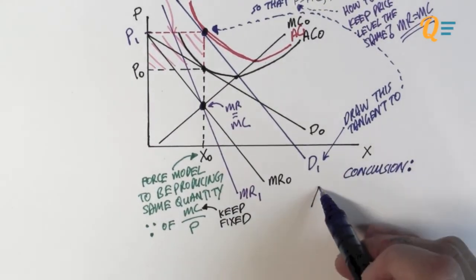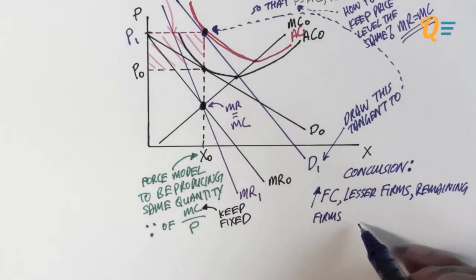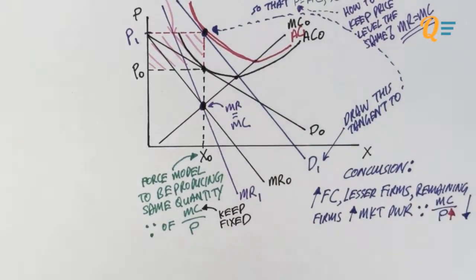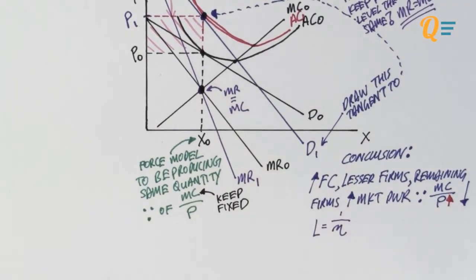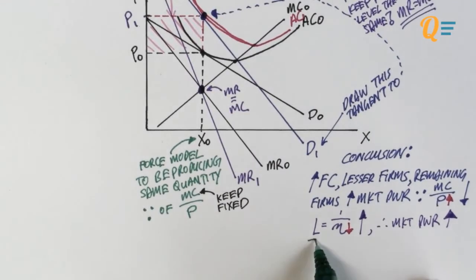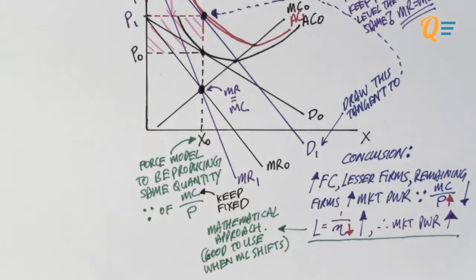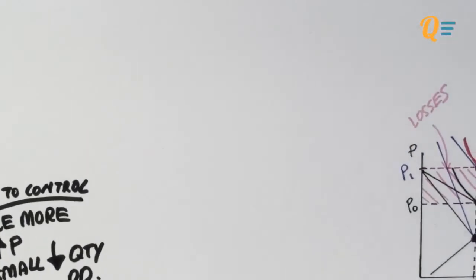I'm forcing the model to produce the same quantity X0 to keep the marginal cost fixed so I can compare the MC to price ratio. The conclusion: when there is an increase in fixed cost, there will be fewer firms in the long run, so the remaining firms experience greater market power. The gap between marginal cost and price is now higher, giving a lower MC to price ratio. Applying the Lerner's Index, price elasticity of demand decreases — demand becomes more inelastic — so the Lerner's Index increases and market power increases. This is the mathematical approach, best used when you need to shift the marginal cost curve.